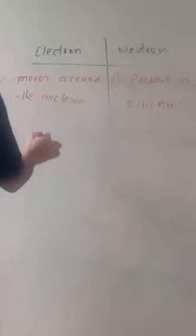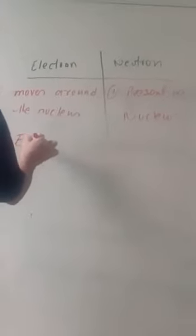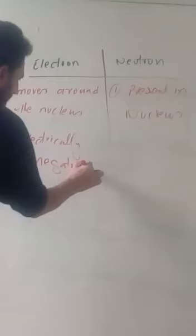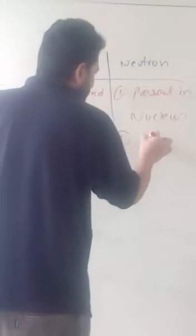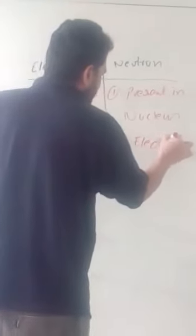The electron is electrically negative — it carries a negative charge. The neutron, on the other hand, is electrically neutral.